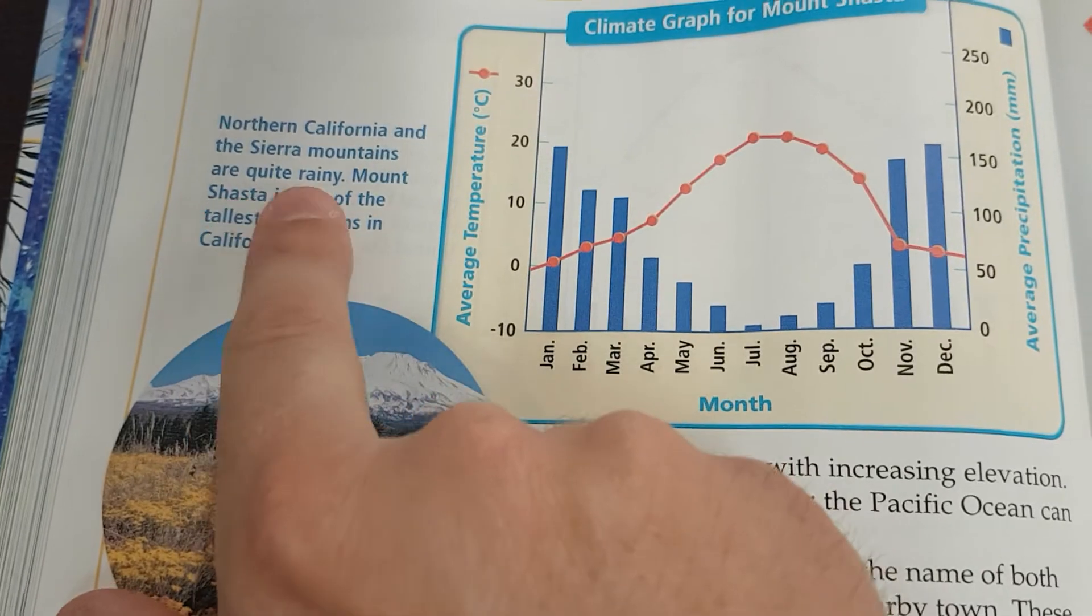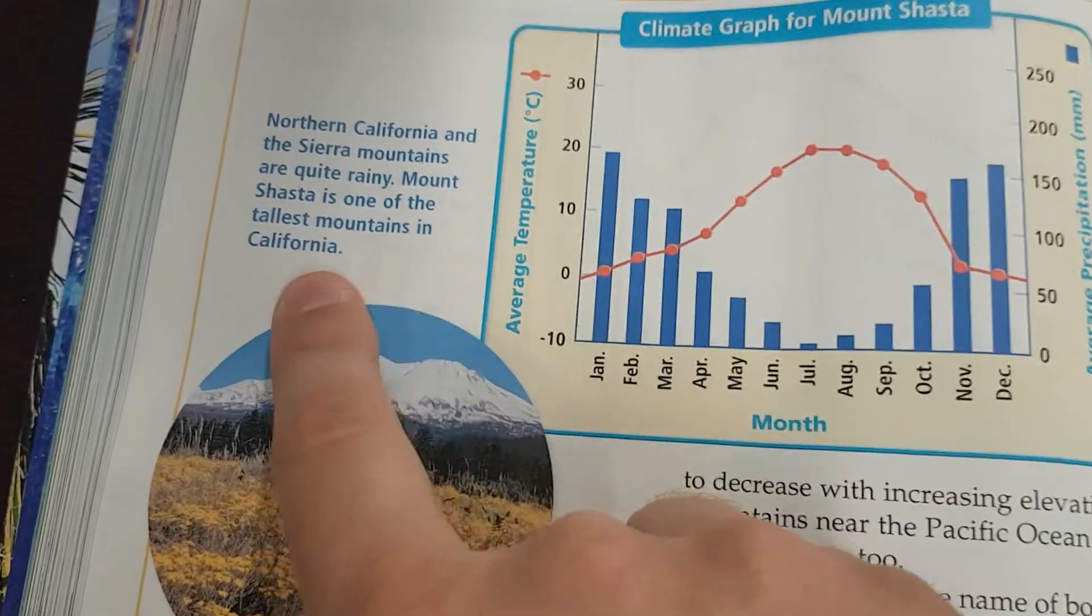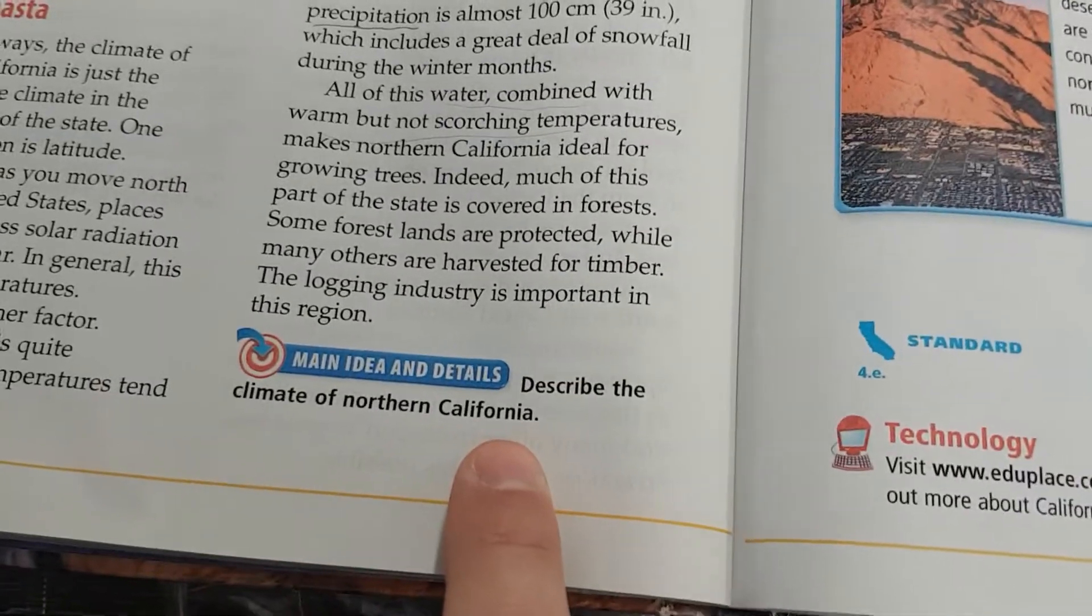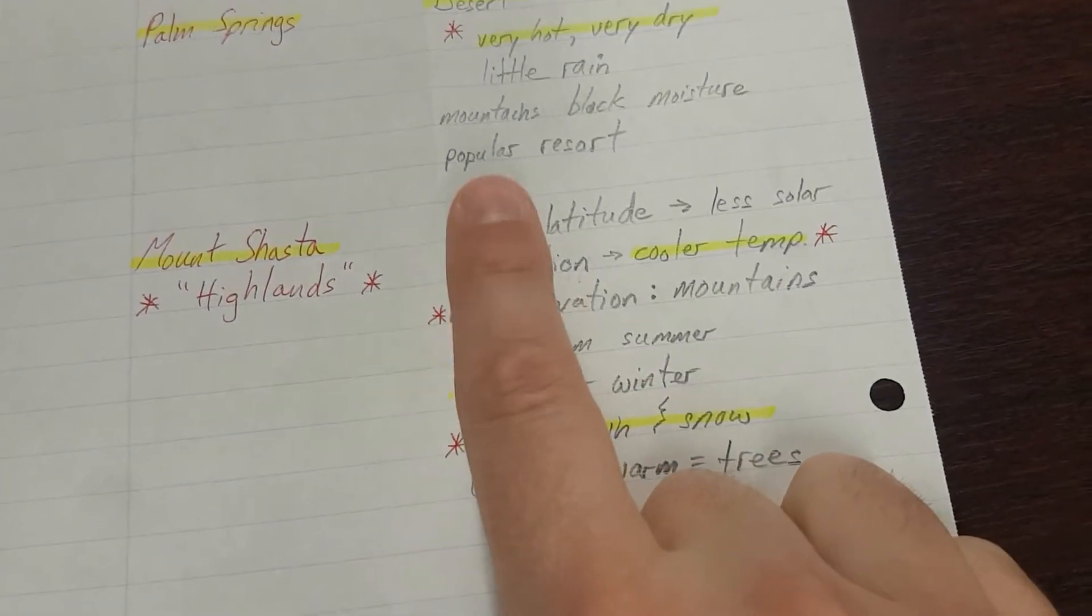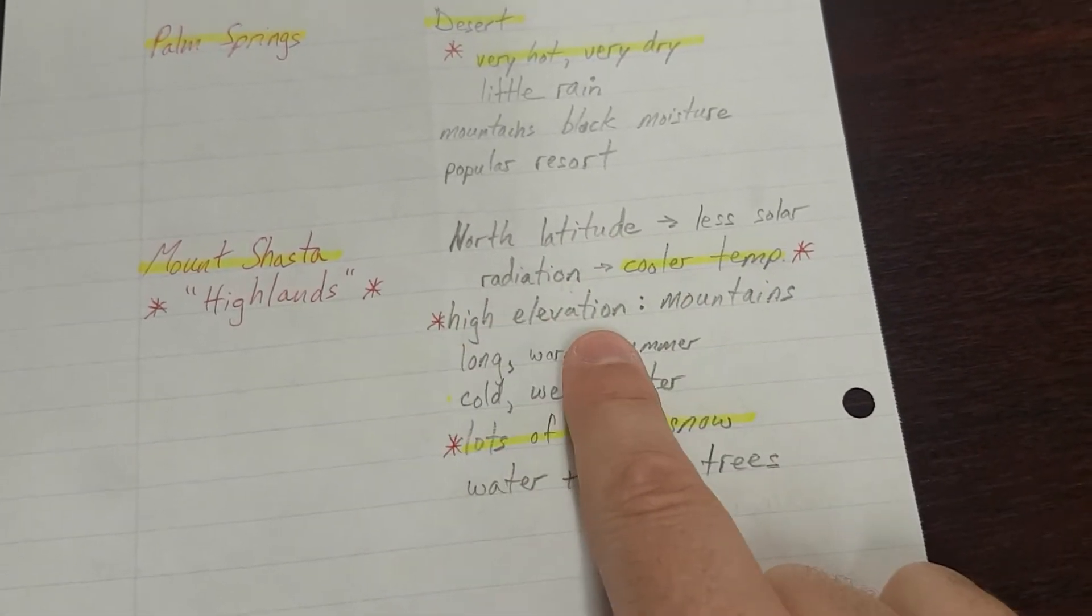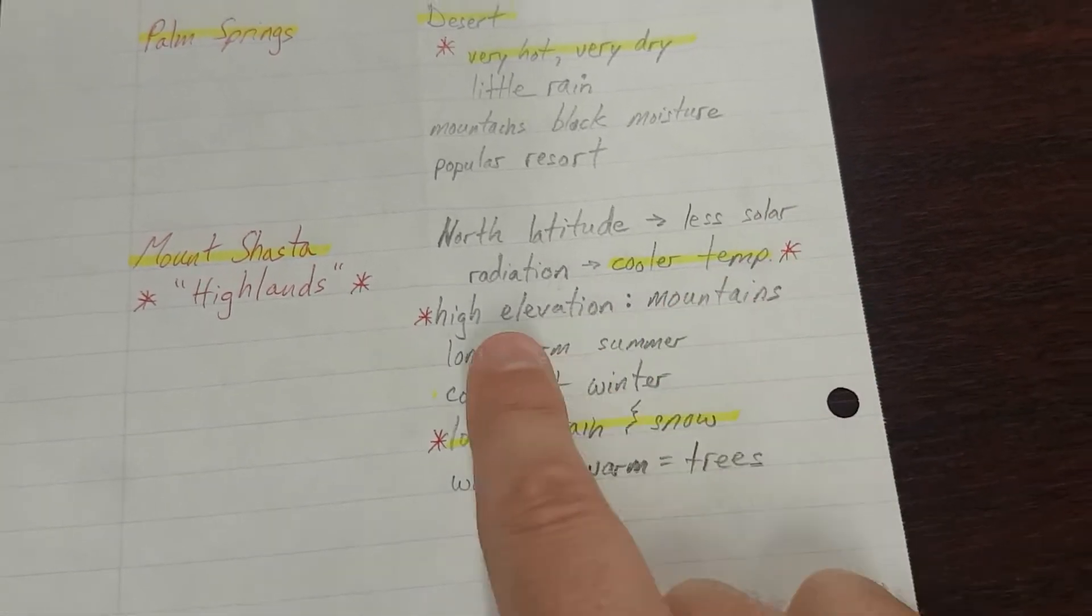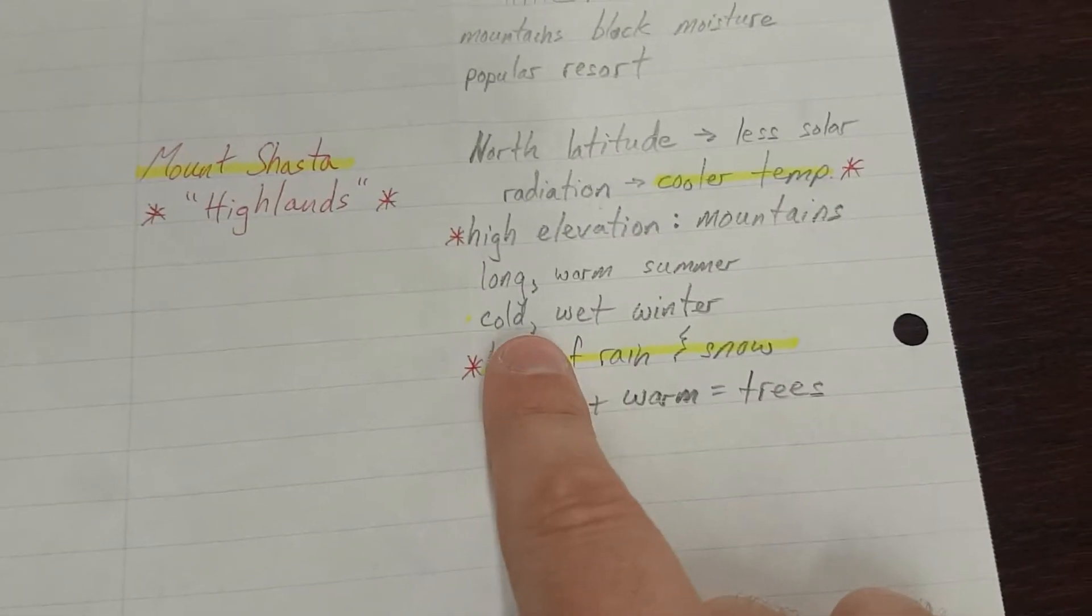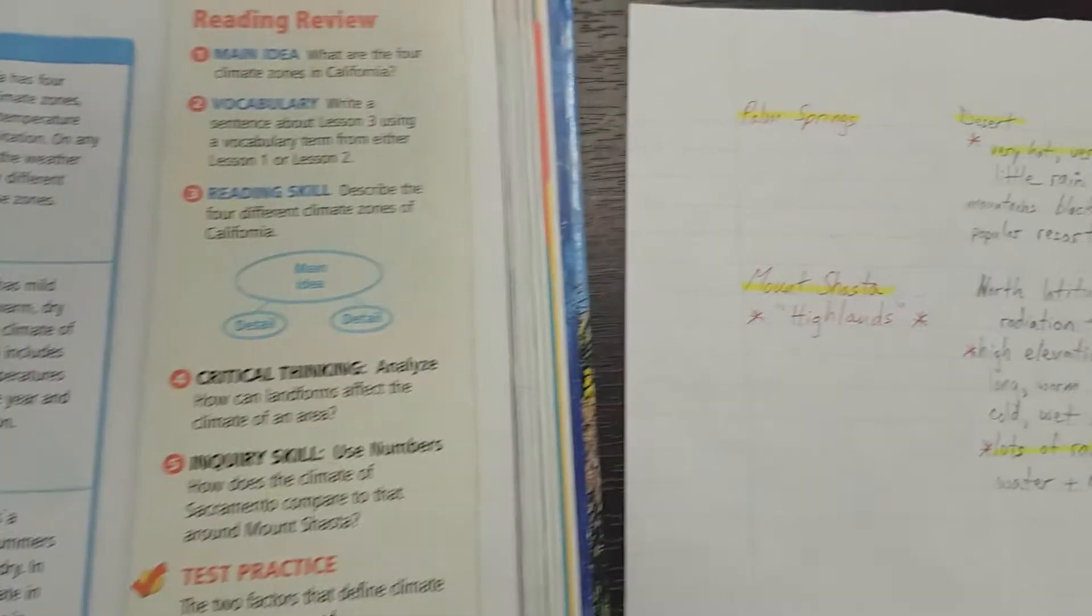Northern California and the Sierra Mountains are quite rainy. Now Shasta is one of the tallest mountains in California. Describe the climate of Northern California. The climate in Northern California, the north latitude, depends on latitude and elevation. The further north you go, the cooler it gets, and the higher up in the mountains you go, the colder and wetter it gets.